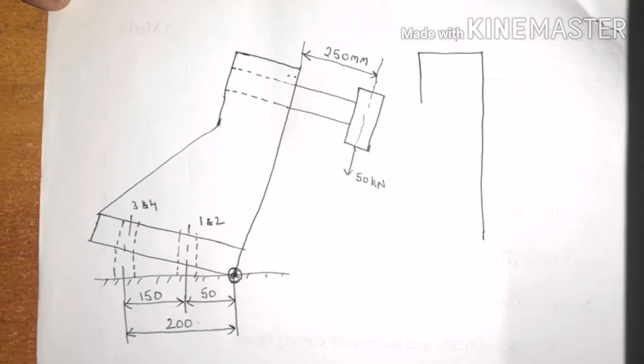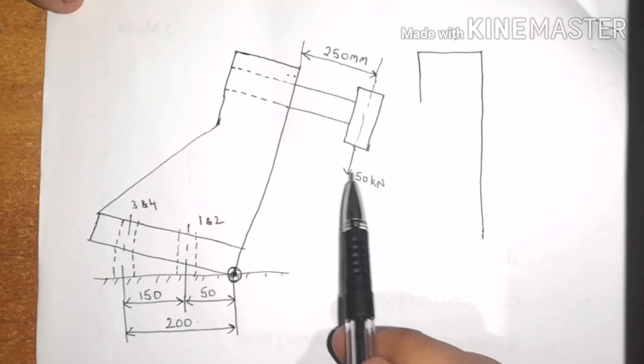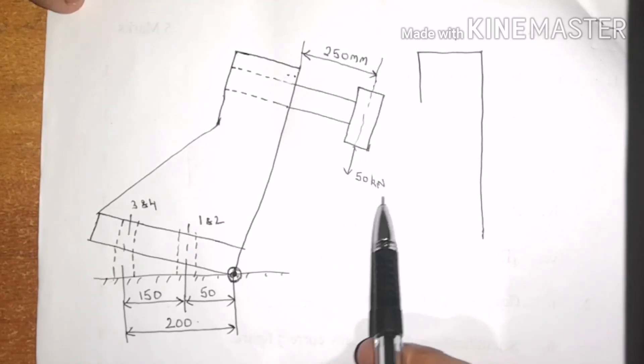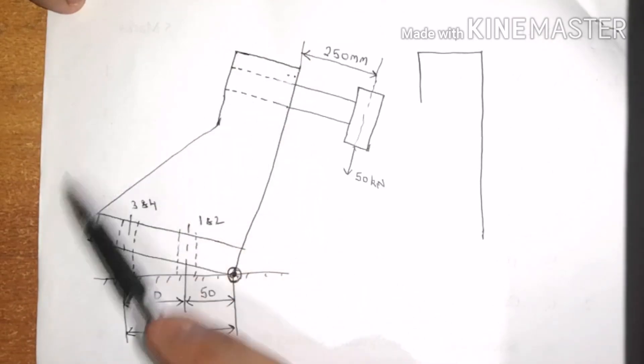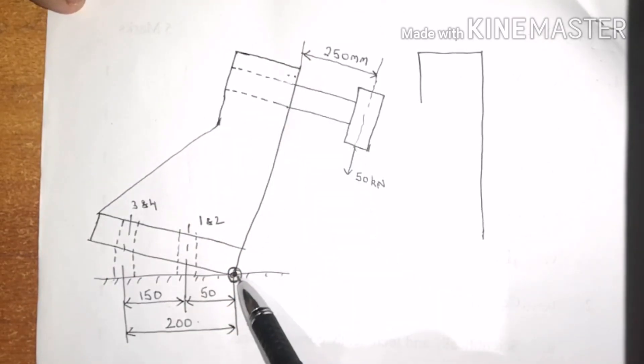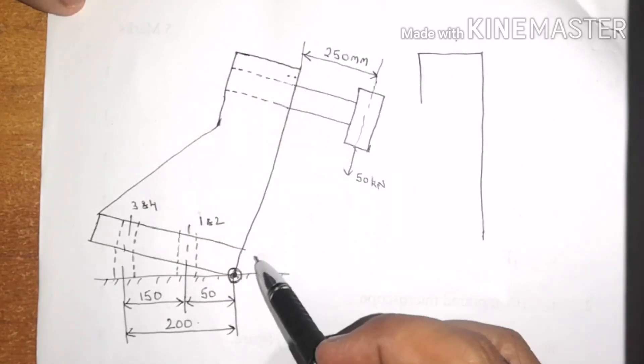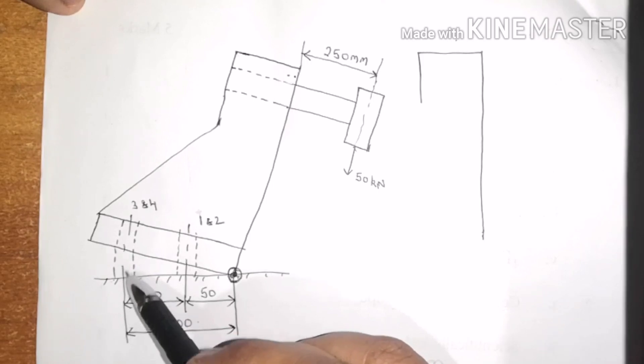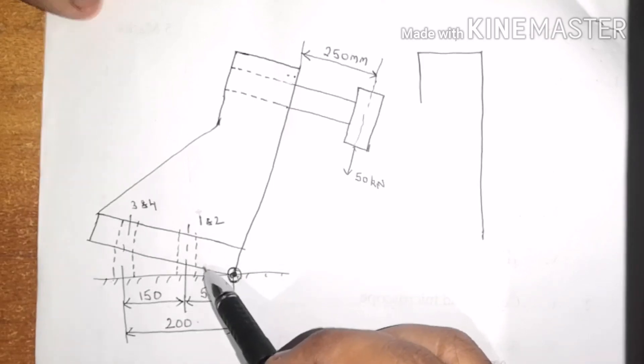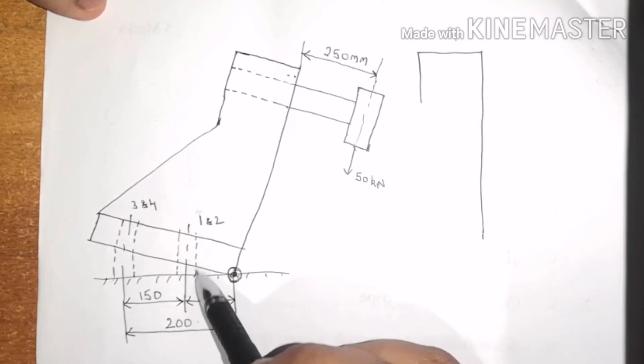From the given figure, a little consideration will show that this load of 50 kN will tend to rotate this entire assembly about this point. While rotating, the bolts will be experiencing a tensile load. As you can see in this diagram, the bolts are getting elongated.